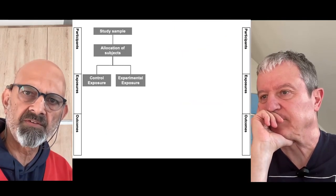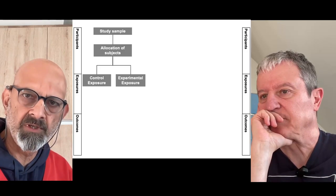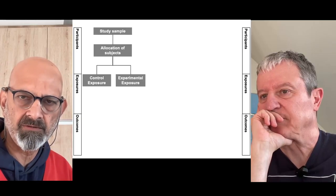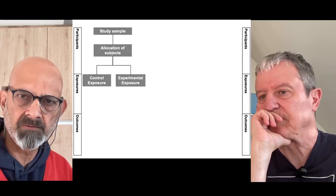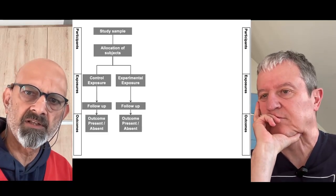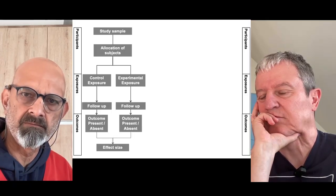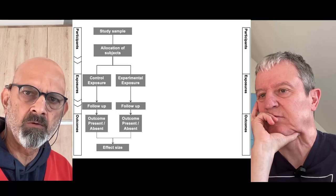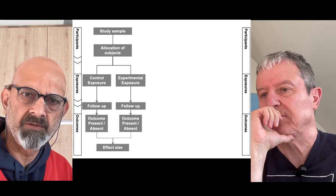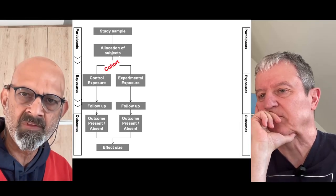If we have a study sample recruited and then we measure whether they are exposed or not exposed to a particular risk factor, and then we follow them up to see whether they suffer the outcome or not, and with this information we calculate the effect — this is, in simple terms, follow-up of a cohort of people in time from measurement of their exposure towards a time when they will be expected to experience an outcome or avoid it. This is a cohort study.